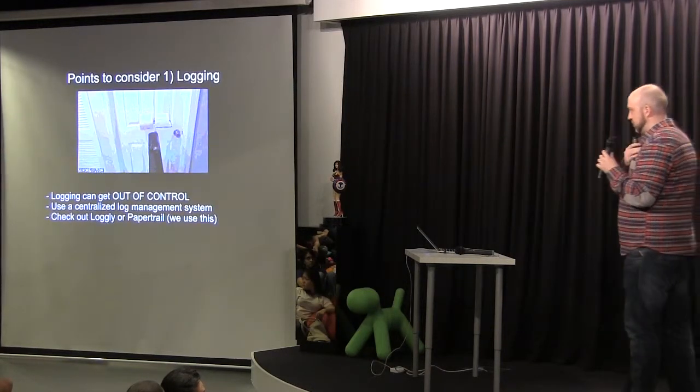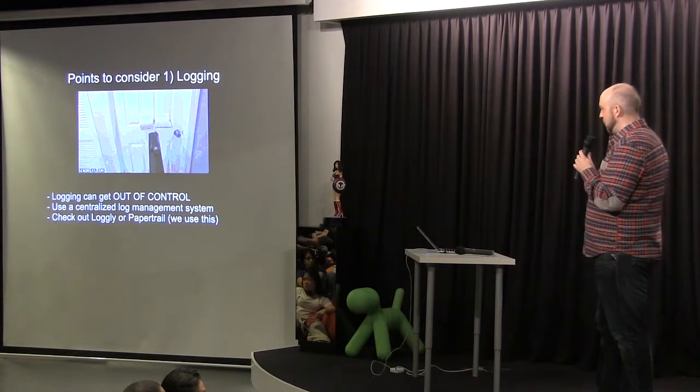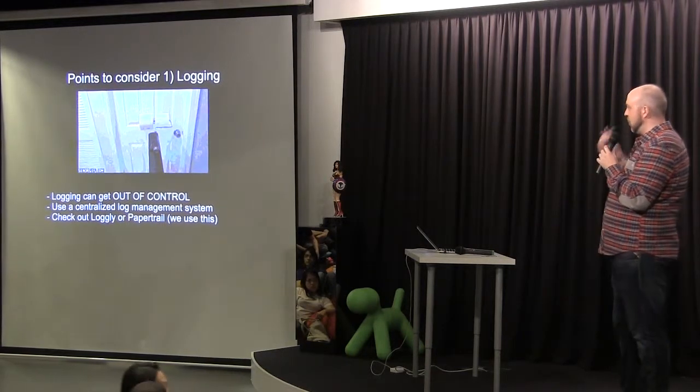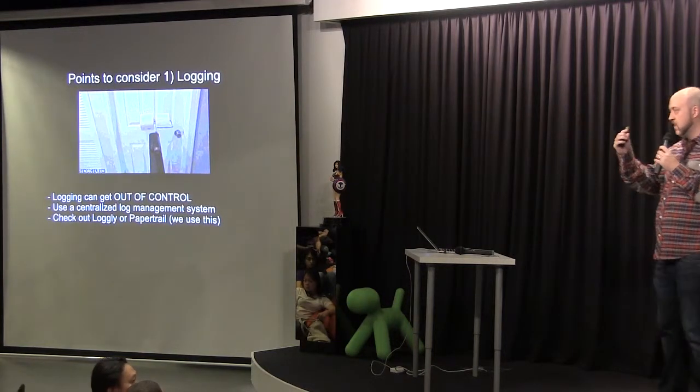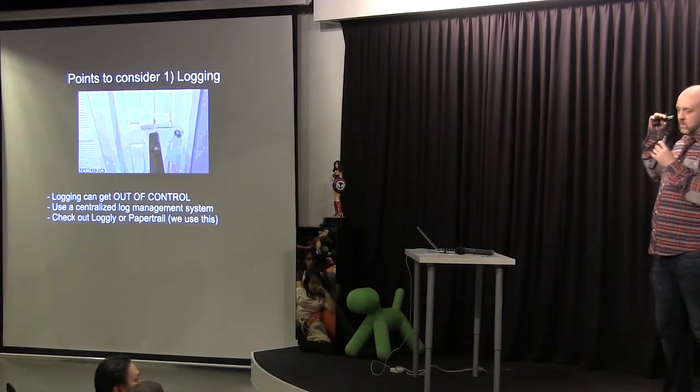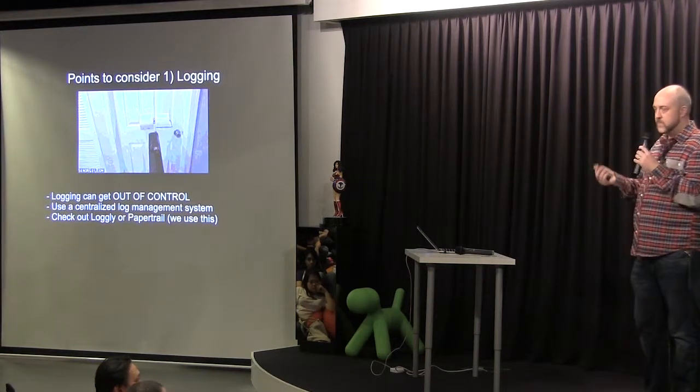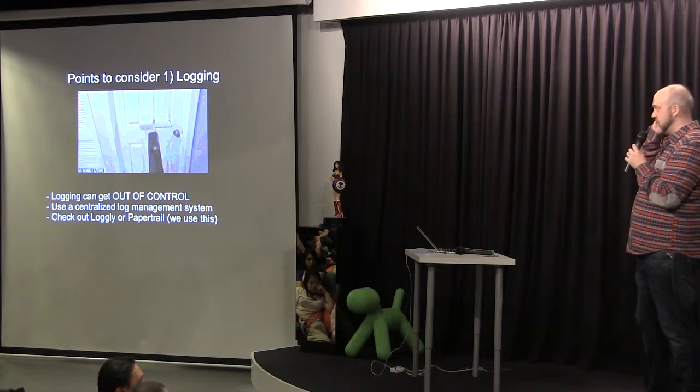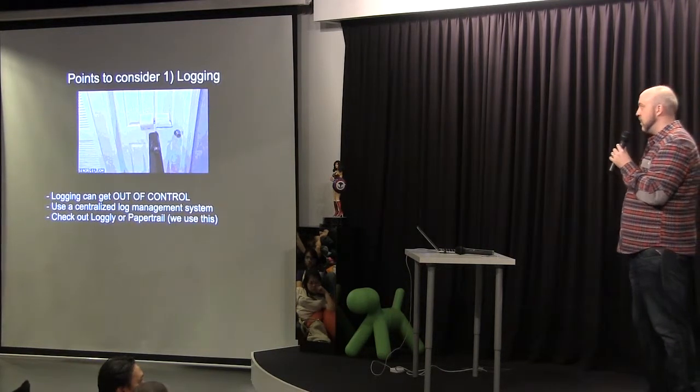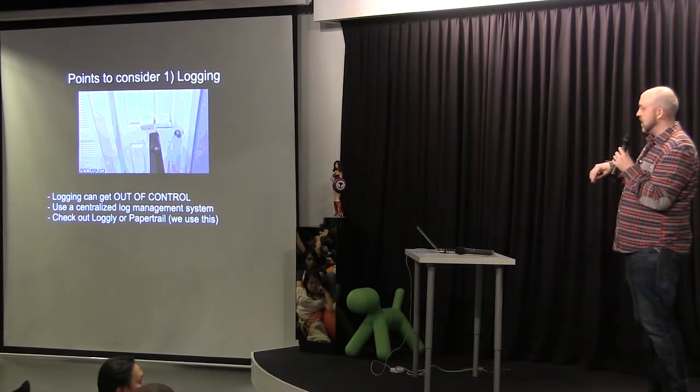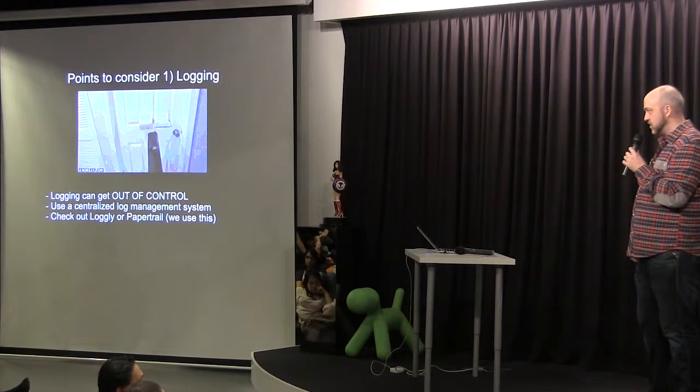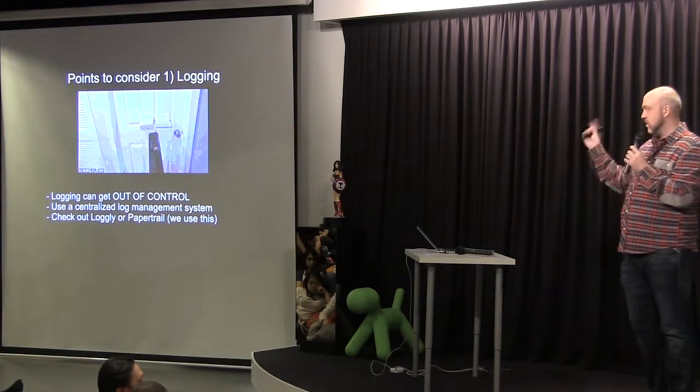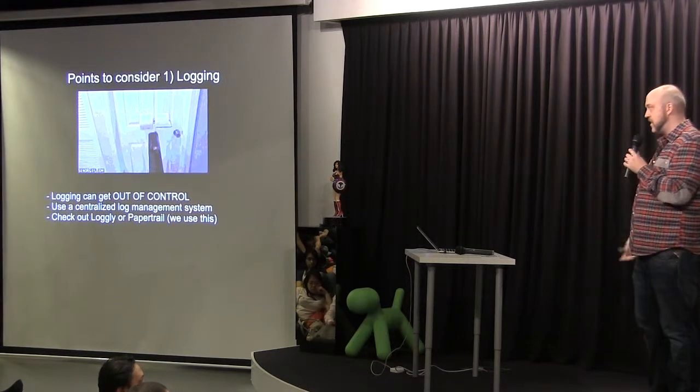So we move on to the points to consider. One is that logging is supposed to be a GIF, but it's not playing. Logging can get out of control really fast. Like if you have 100 servers, your web server's logging, your application's logging. Usually, the application handler like PHP or Unicorn is also logging. So if you have 100 servers with four sets of logs for every website, it can get really crazy. It's one thing you have to think about quite early on. It's fairly easy to get around it now. You can use a centralized log management system. We're using PaperTrail in Mindvalley, but Loggly's pretty good as well. So basically, you send all your syslogs into the cloud. It's searchable, it's archived. You can put it onto S3 if you want.